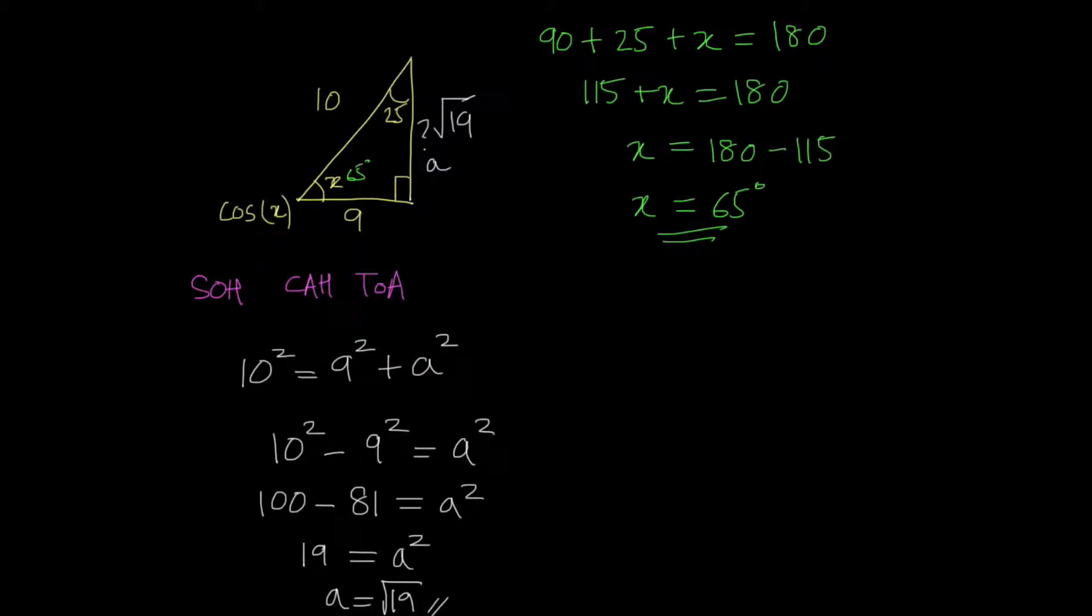Now, to find the cosine of x, cosine of x, we know from here that that equals the adjacent over the hypotenuse. My x is 65, so cosine of 65 equals my adjacent, so the adjacent side to x is 9, 9 over the hypotenuse, which is square root of 19. So this would be our answer.